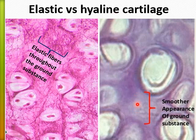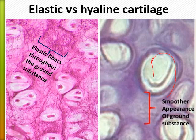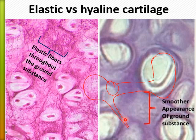Comparing elastic with hyaline cartilage: the hyaline has more matrix and you cannot see the fibers, while in elastic cartilage the fibers are visible and the cell nest has no more than two cells. Elastic cartilage is found at the ear pinna, external auditory canal, eustachian tube, and the epiglottis, which closes the respiratory passage during swallowing.